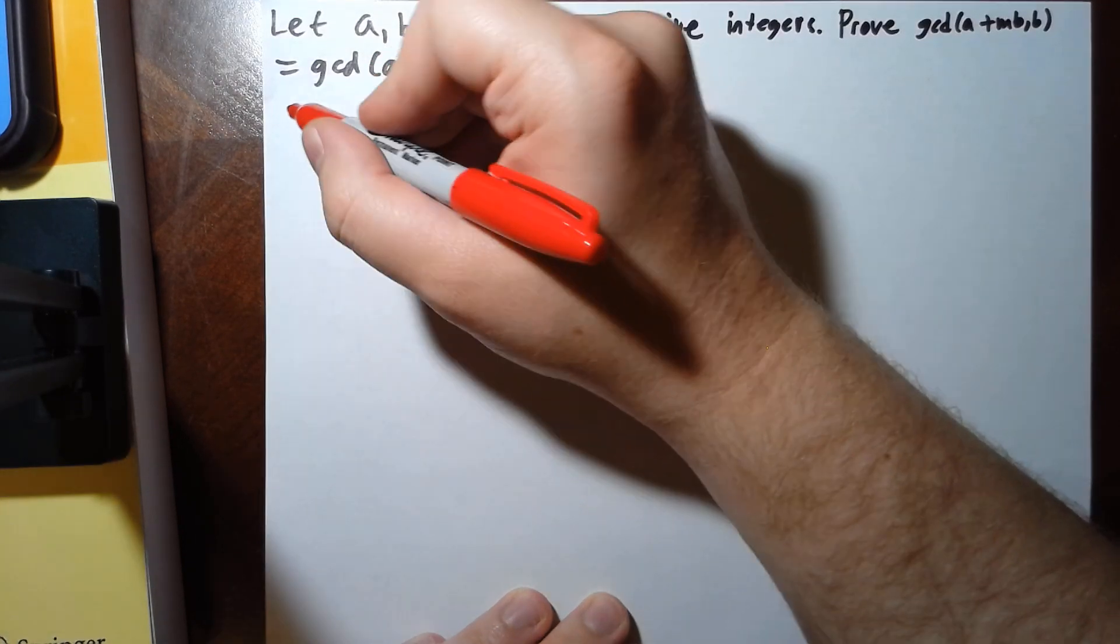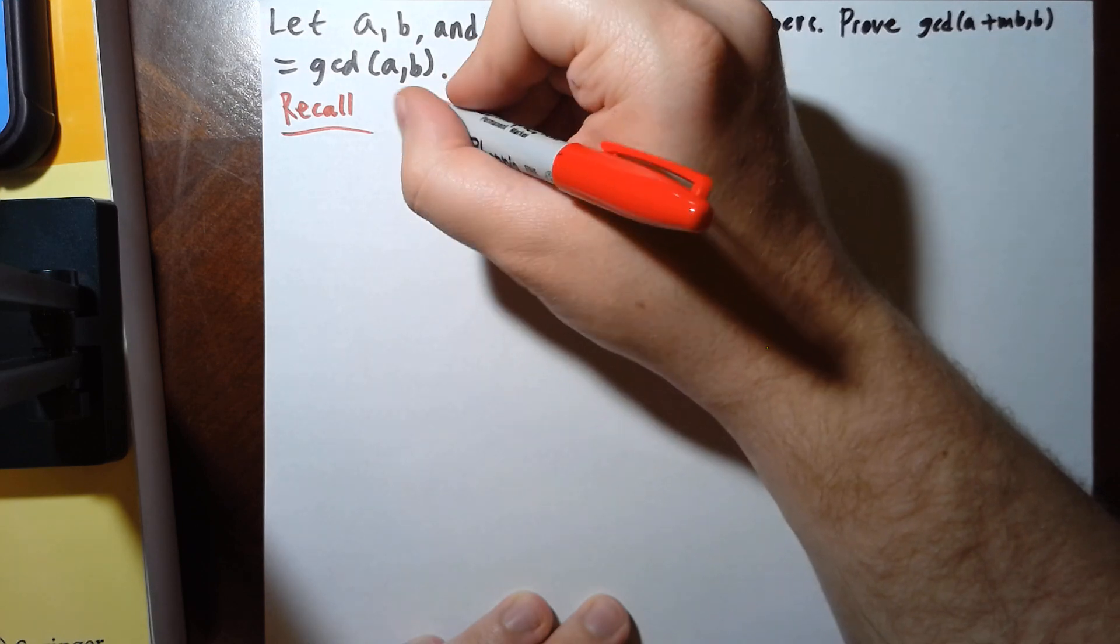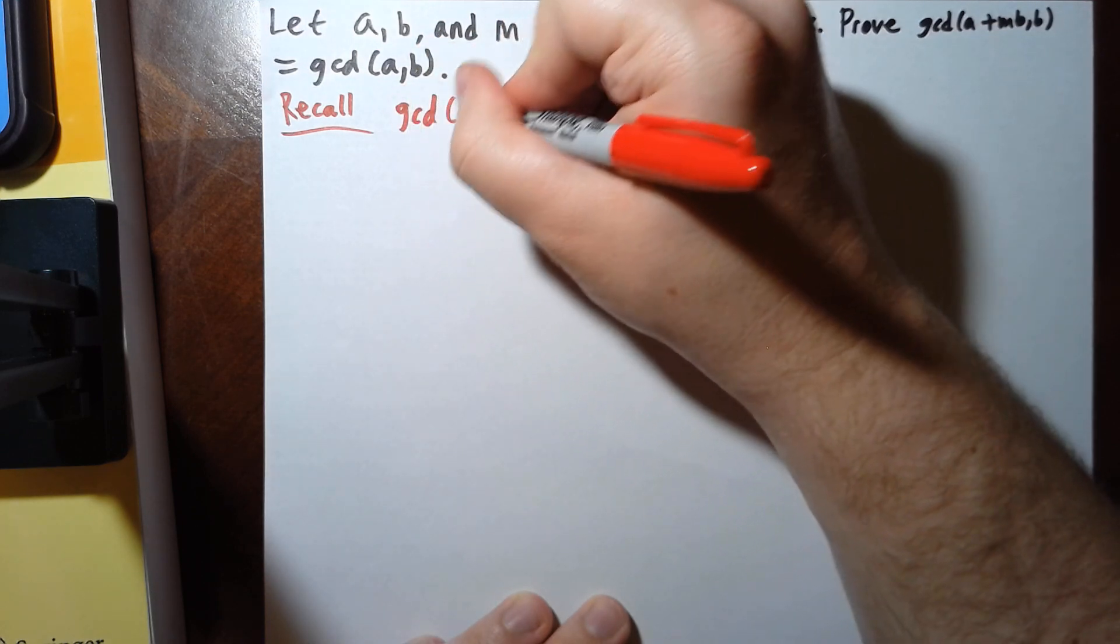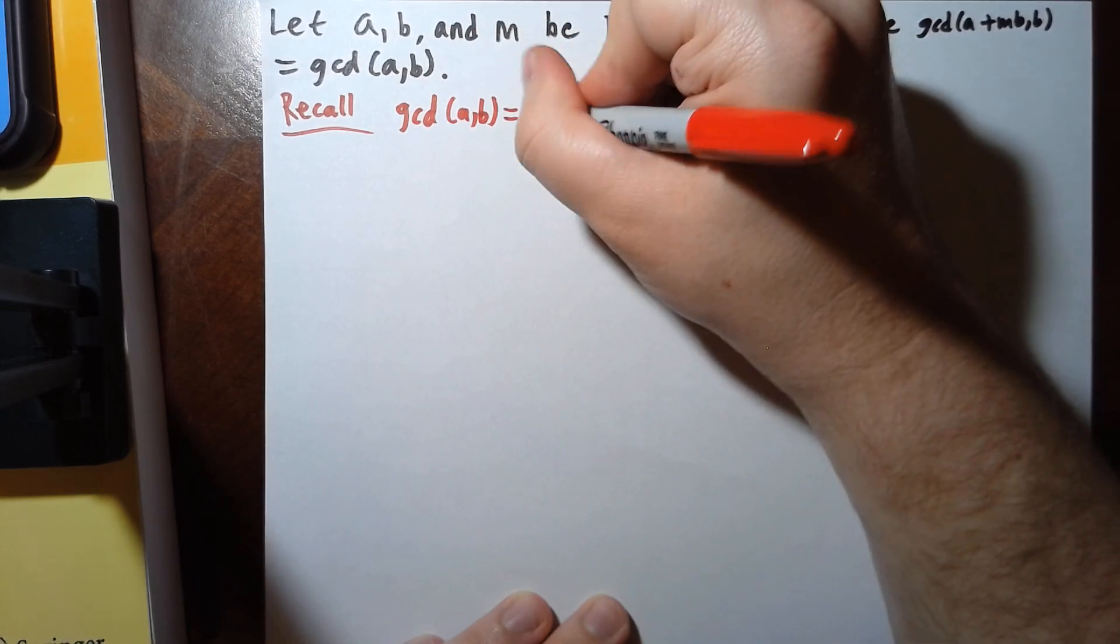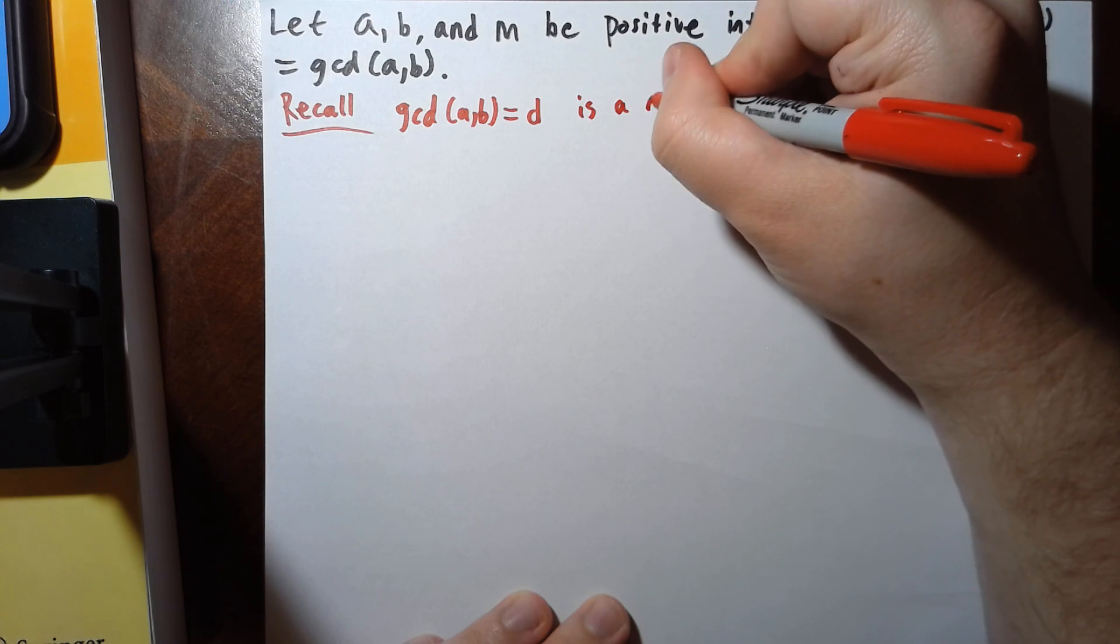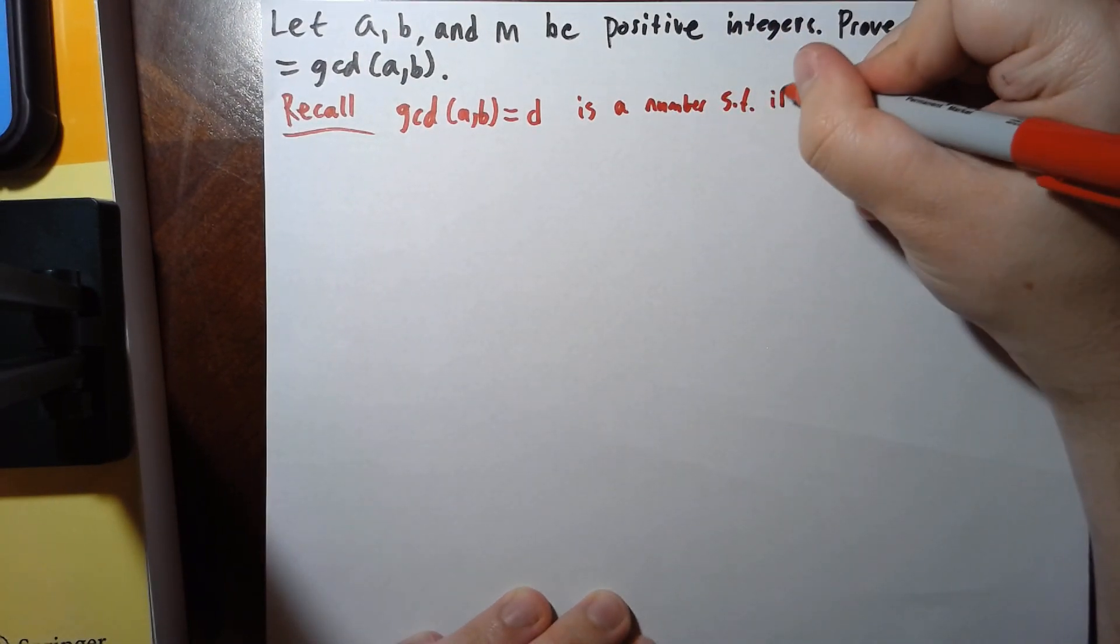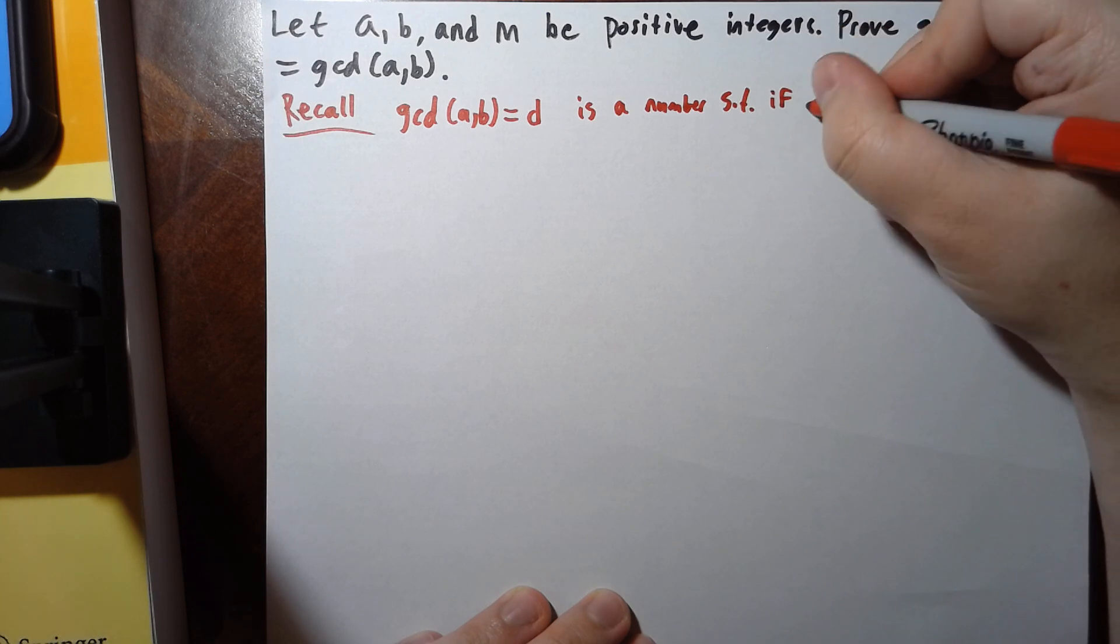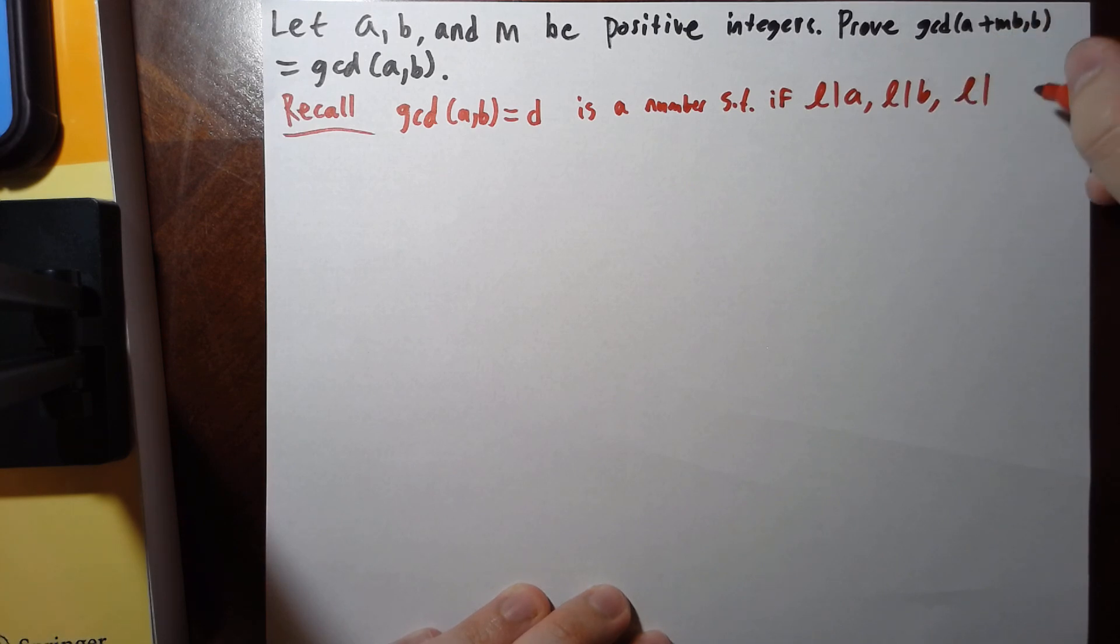I'm going to use the following definition of GCD. Recall, the greatest common divisor of a and b, call this d, is a number such that if I have some number l which divides a and l divides b, then l has to divide the greatest common divisor d.